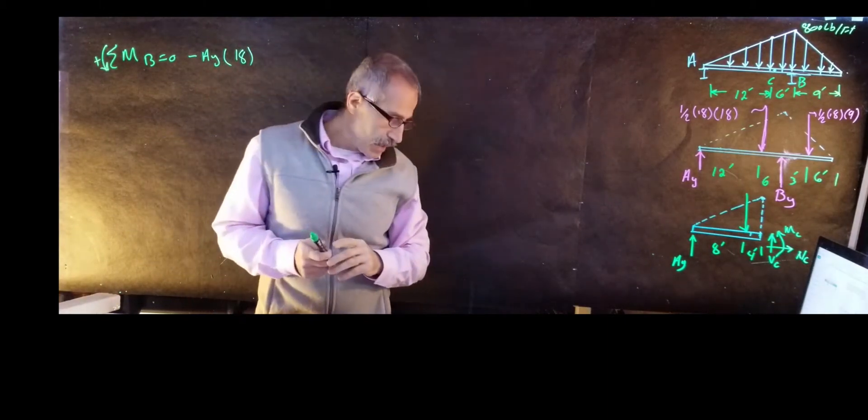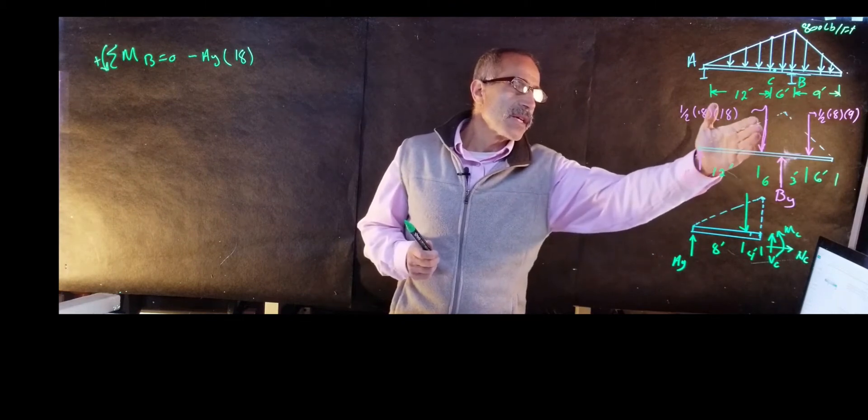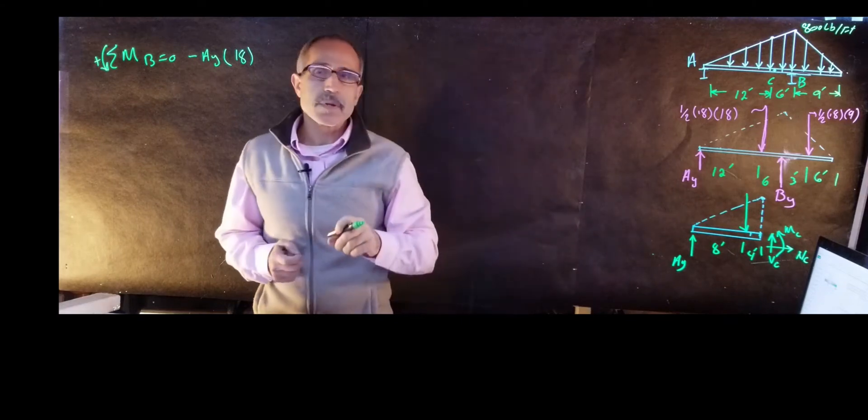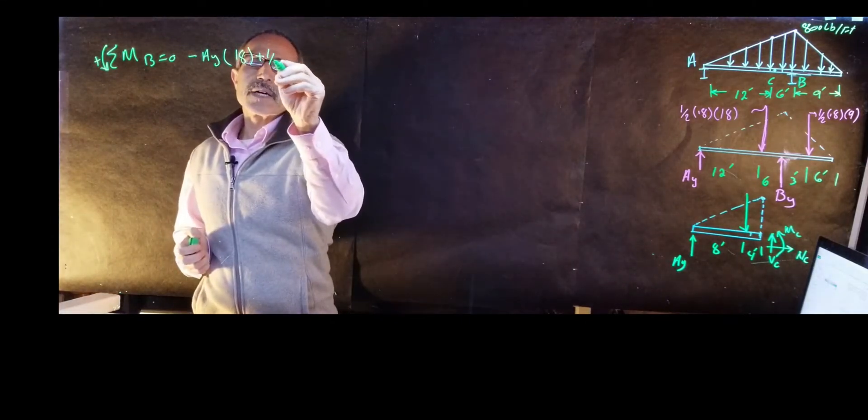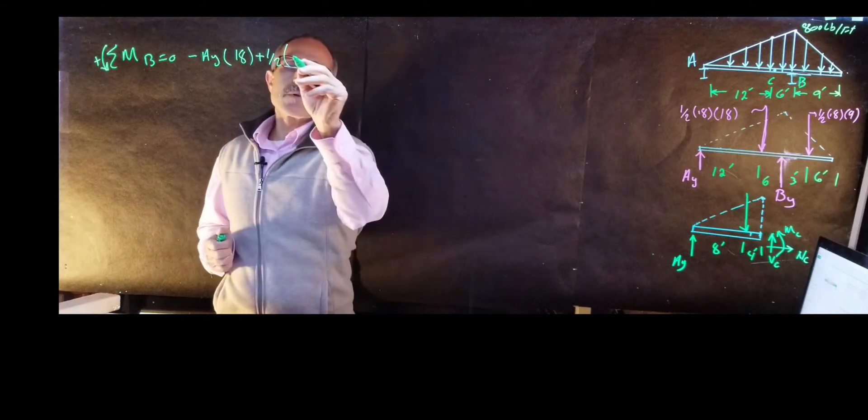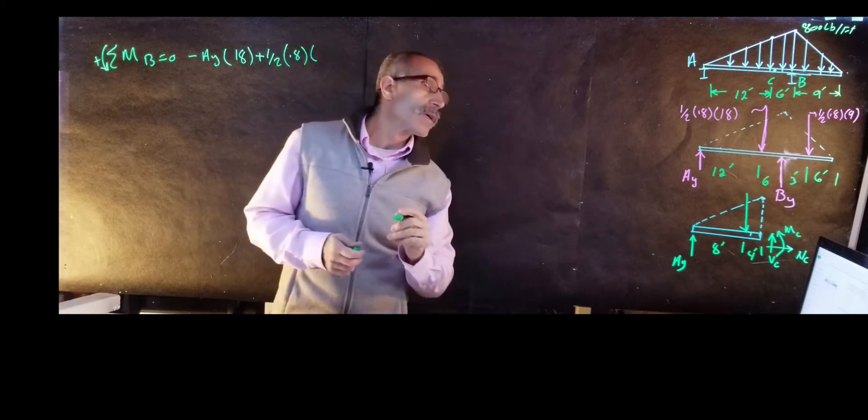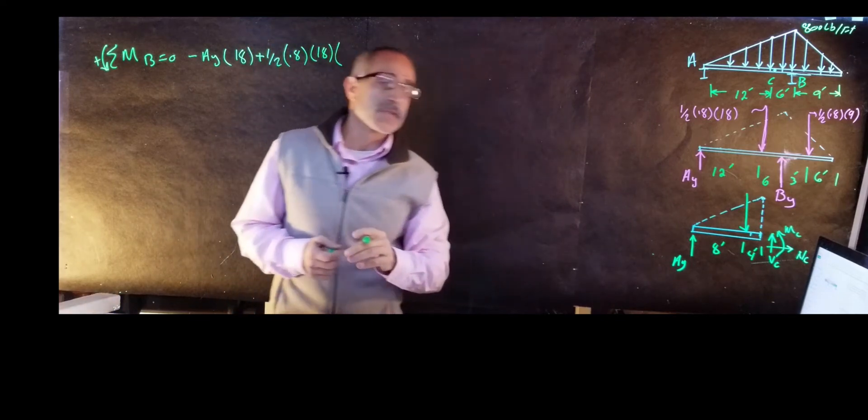Then after here, when I leave from here, the next force I have is this one right here, and that's going to be a times BY. So it's going to be plus one, that's going to come up positive, plus one-half times 0.8 multiplied by 18, and the distance for that is going to be 6 feet.